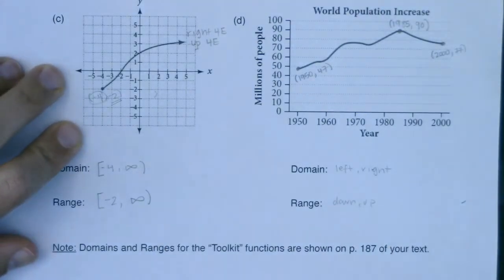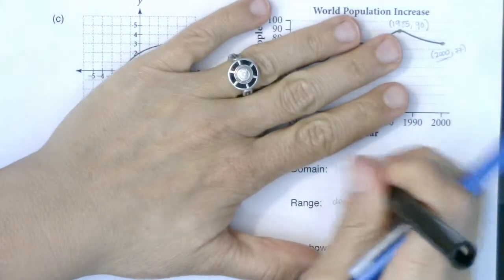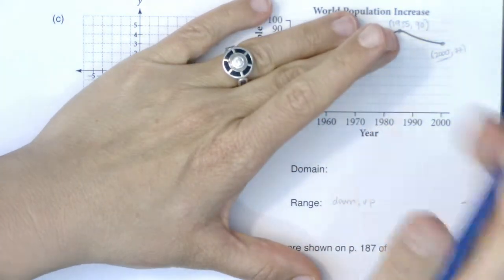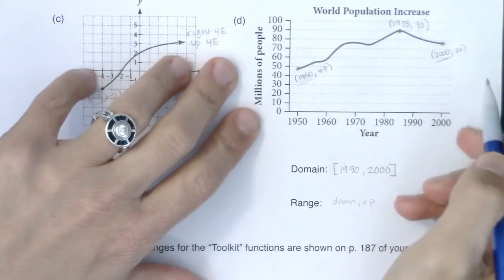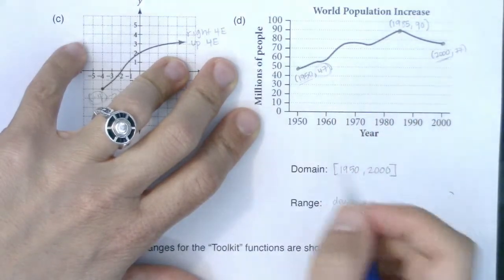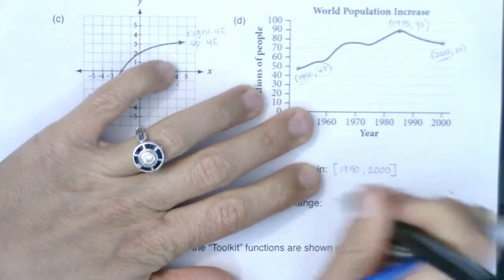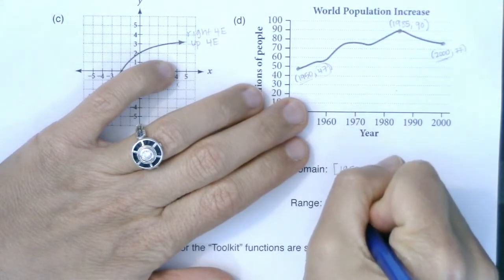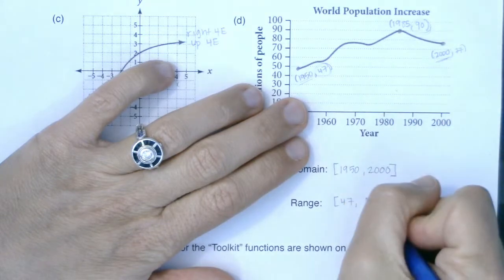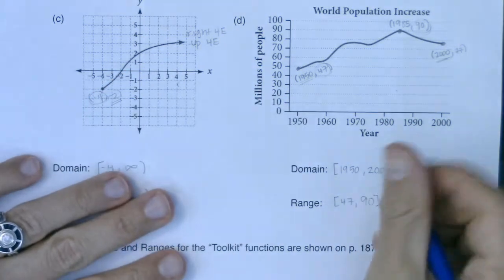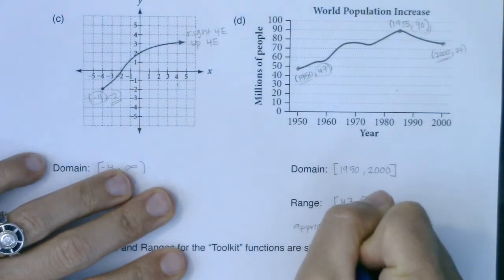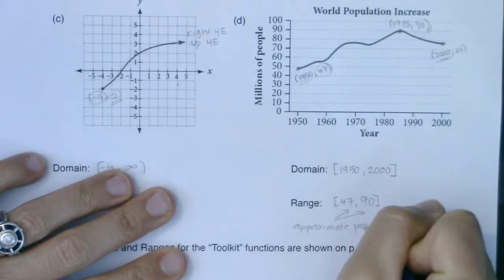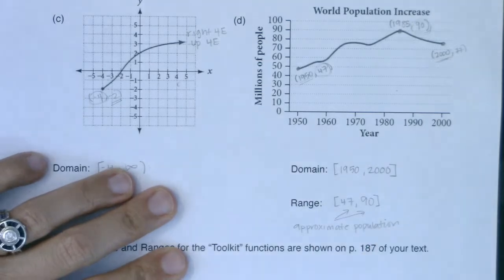So let's see if we can do this. For left to right, it looks like I want my leftmost point to my rightmost points. So 1950 to 2000. I'm going to include both of those. And then my lowest point was 47 or approximately 47. It's my best guess. So I'm going from 47 to my highest point of about 90. And again, with this, I'm saying these are approximate numbers, approximate population. I don't know for sure. I wasn't given the raw data, but that's going to be my best guess.